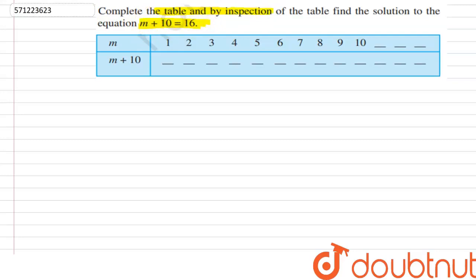Here we are given a table as shown. Now we have to fill the empty spaces in this table. What is m? m = 1, 2, 3, 4, 5, 6, 7, and so on. After 10 we get 11, 12, and 13.